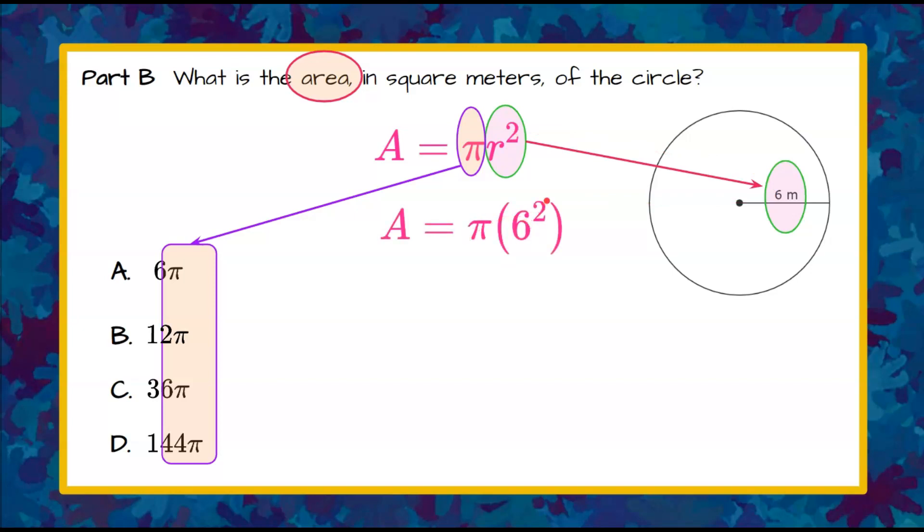So π times 6 squared, 6 squared is 6 times 6, which is 36. And then when we write that 36 times π, we can see that our answer is C.